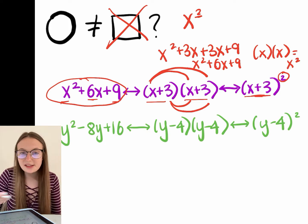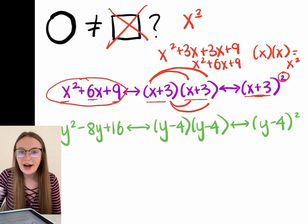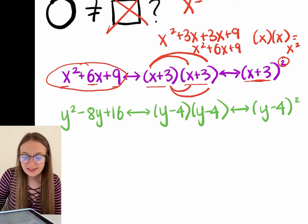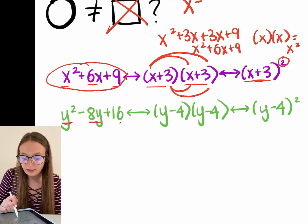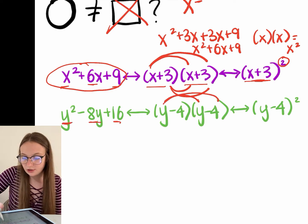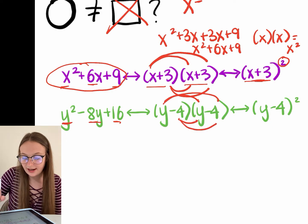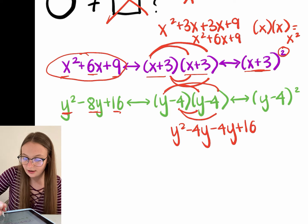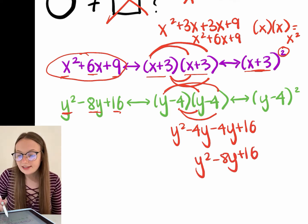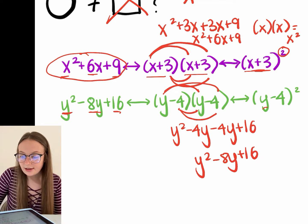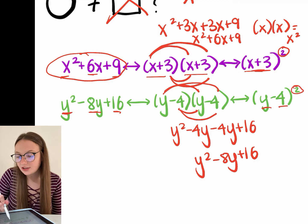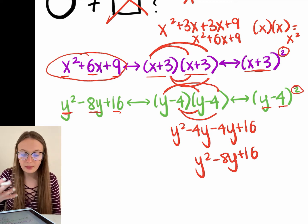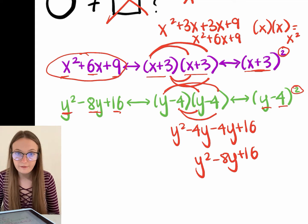It doesn't matter what the variable is — x, y, whatever. The same applies to the y variable. If we have a trinomial with y, foiling gives us y squared minus four y minus four y plus sixteen, so y squared minus eight y plus sixteen. That can alternatively be rewritten as y minus four squared, because it's each of those terms multiplied by each other. That's how we go from the trinomial version to the squared version.